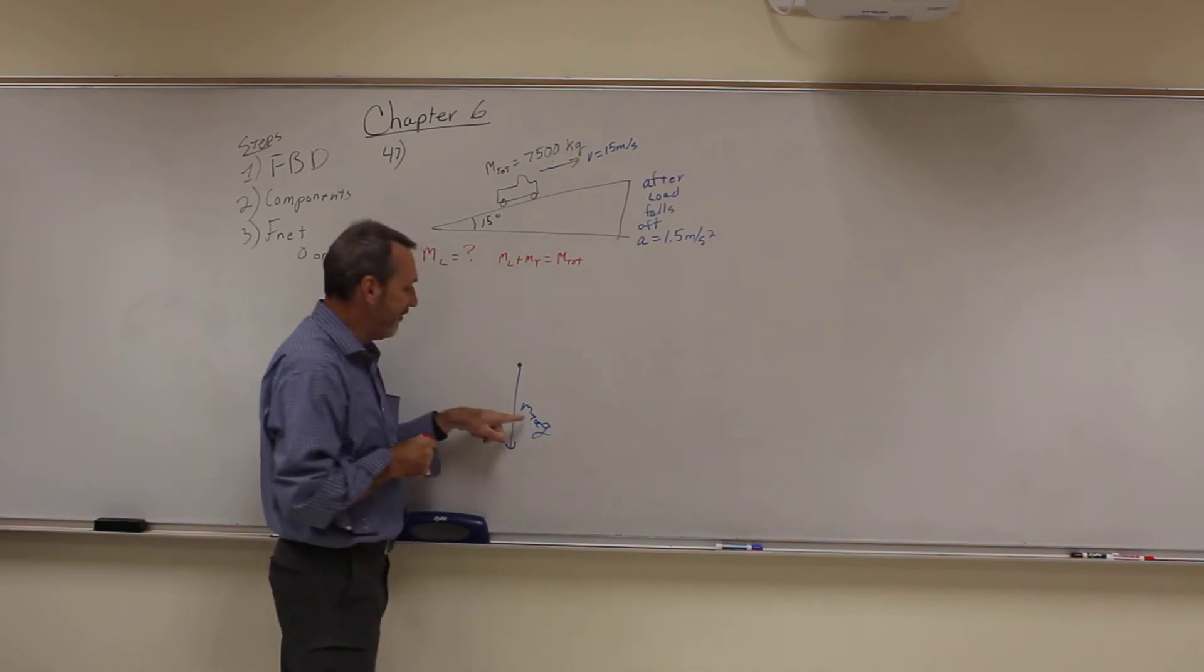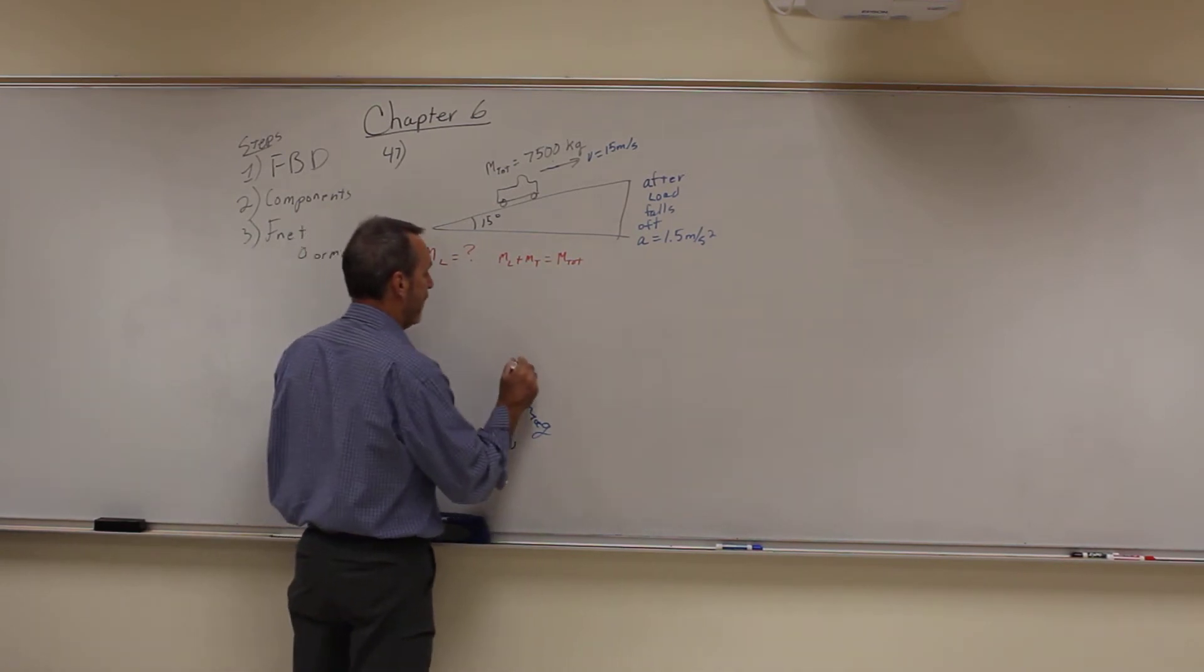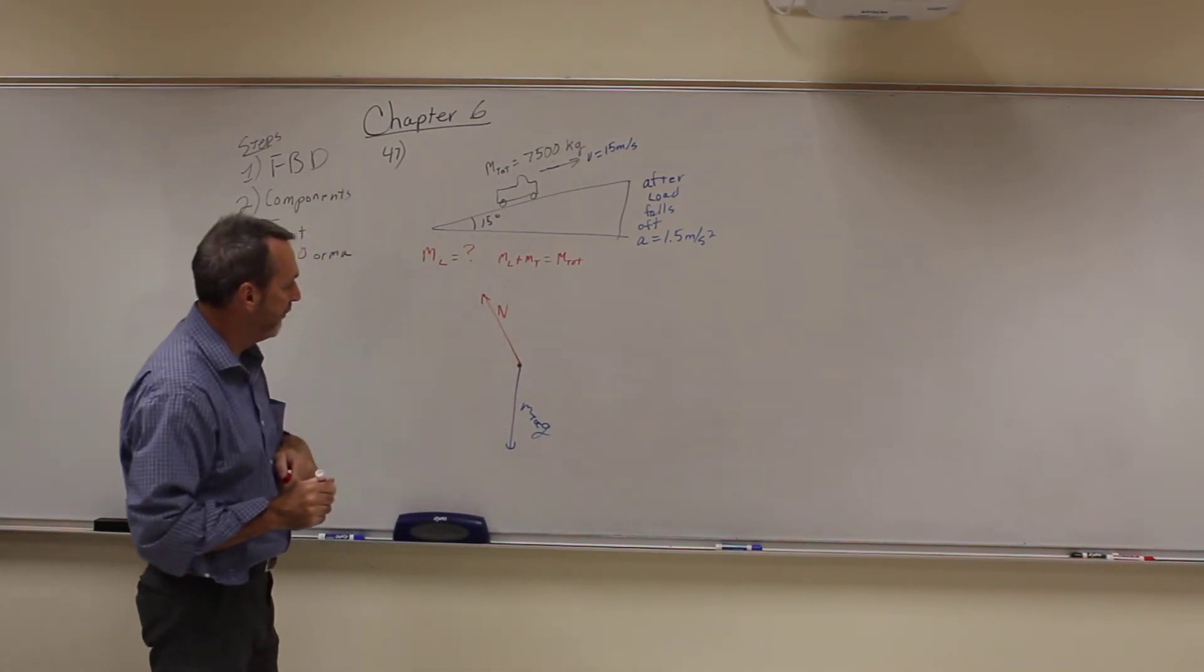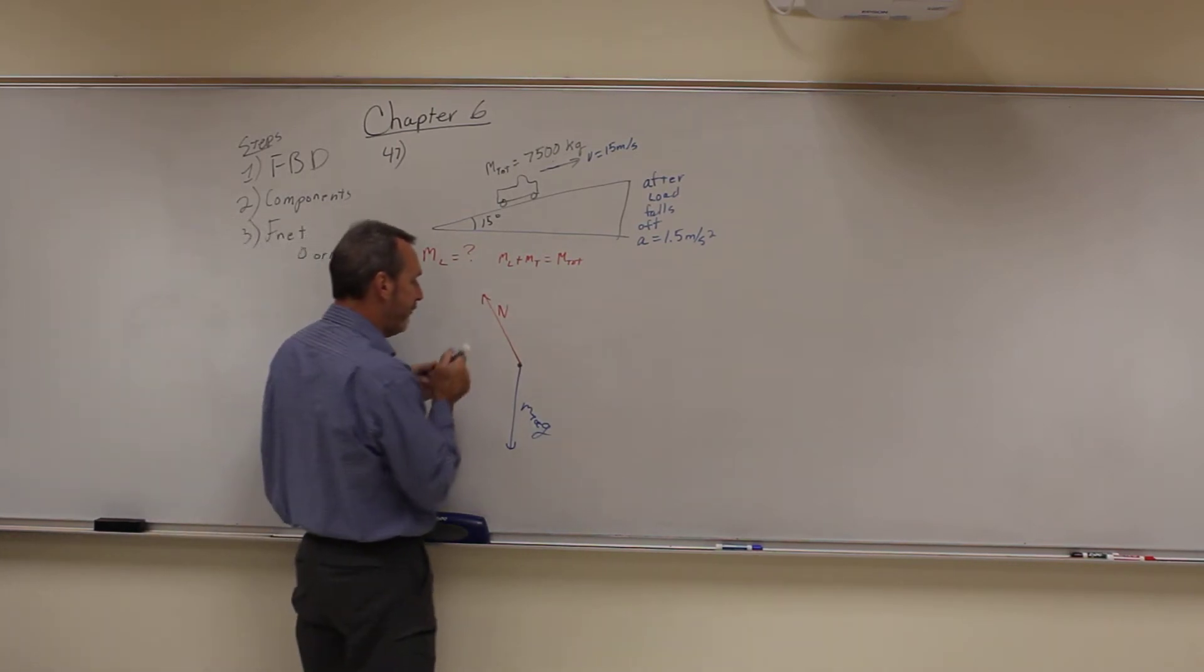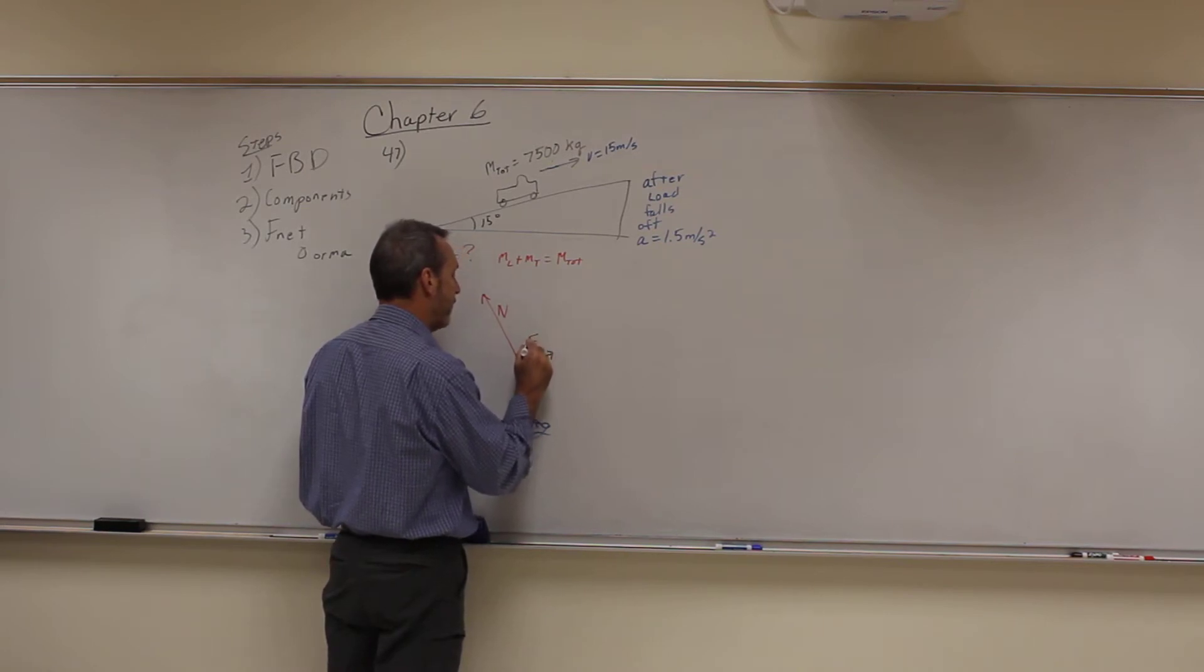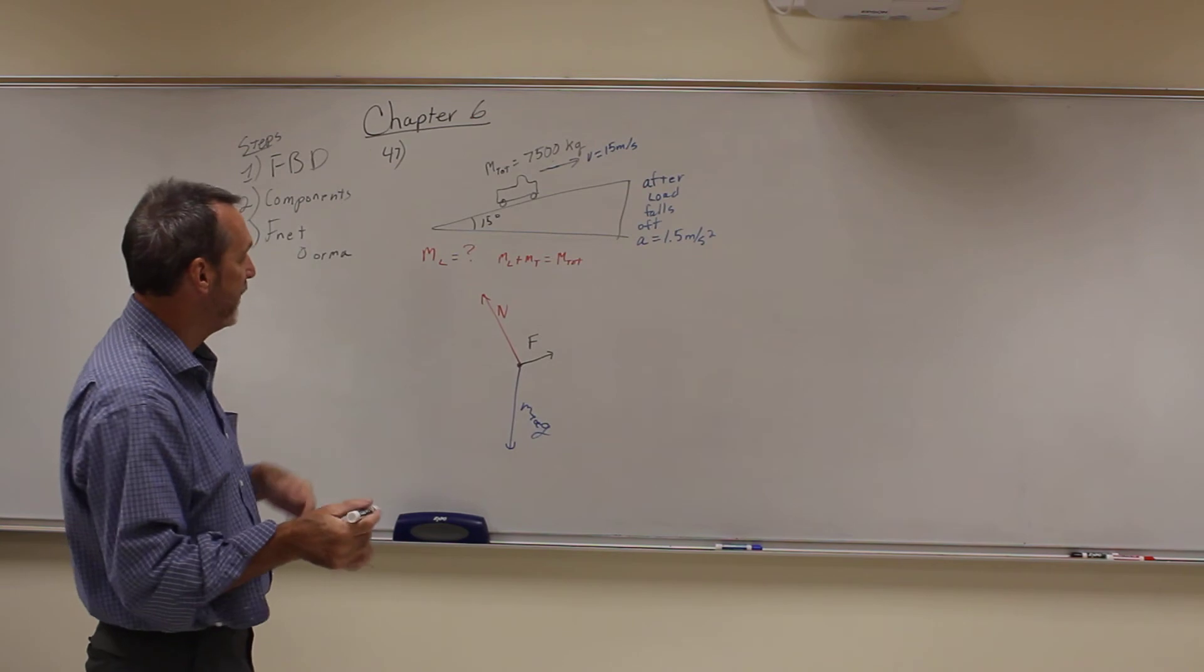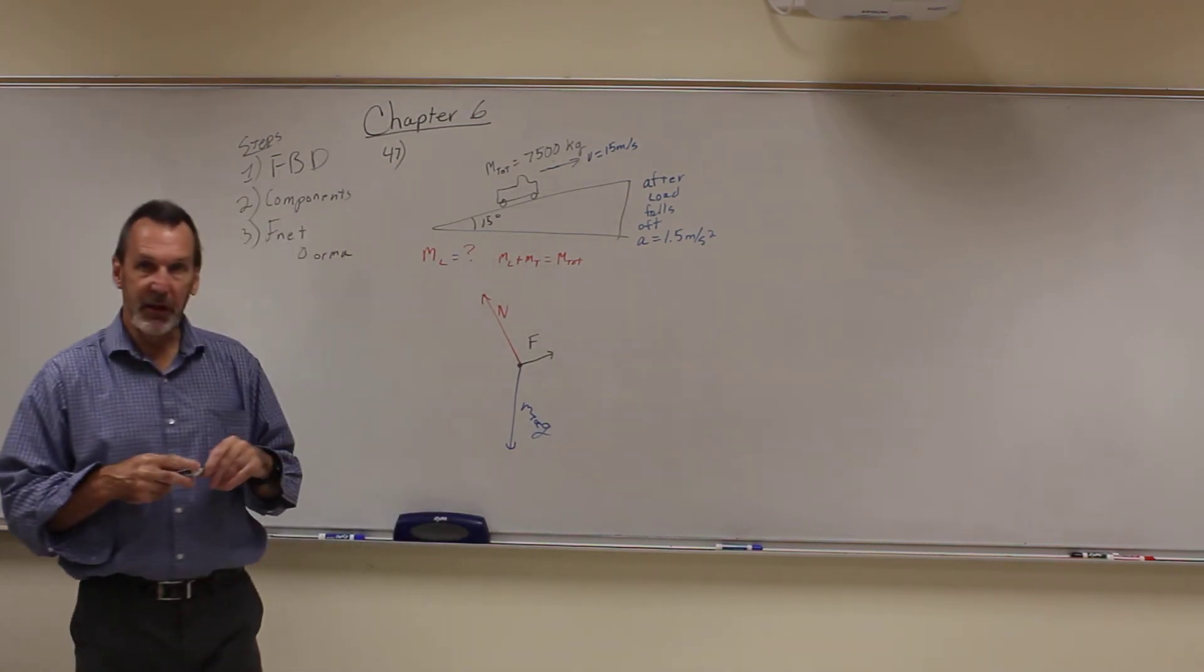All right. So we got the mass total times gravity, so that's gravitational force on the truck. We got the normal force from the inclined plane. Then we have a force of the engine. We're just going to call it F, or the impulse force. So it's the force that's pushing the wheels that's making it move forward. And originally, that's all we have.